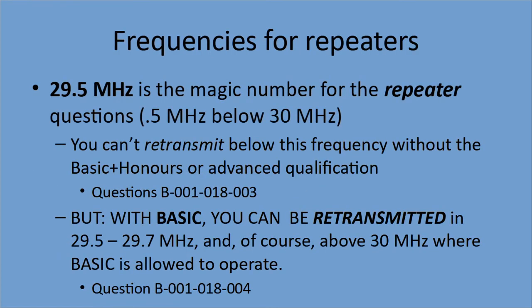Frequencies for repeaters: generally they're used at 30 megahertz and above in the VHF and UHF ranges. Those ranges are allowed for BASIC qualification. 29.5 megahertz is a magic number for the repeater questions — you can't retransmit below this frequency unless you have the BASIC with honors qualification. But with BASIC, you can be retransmitted in 29.5 to 29.7 megahertz, and of course above 30 megahertz where BASIC is allowed to operate.